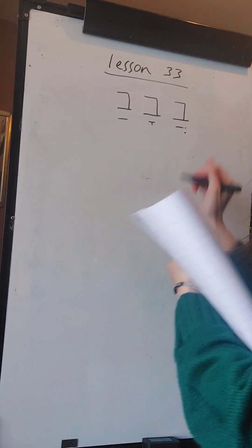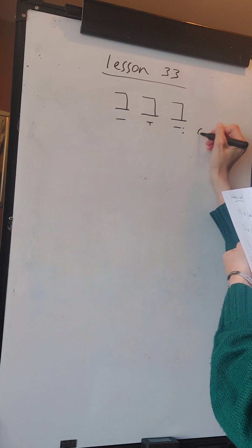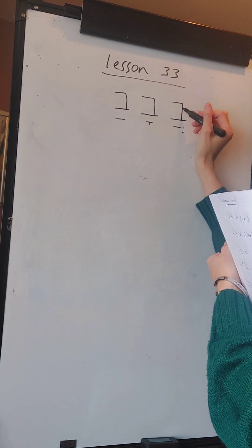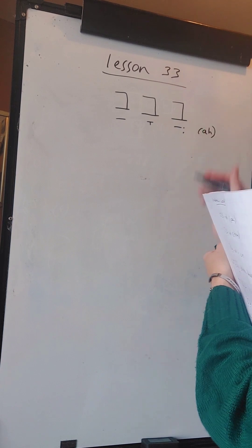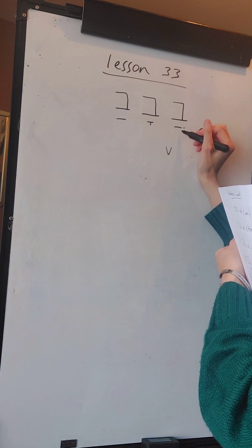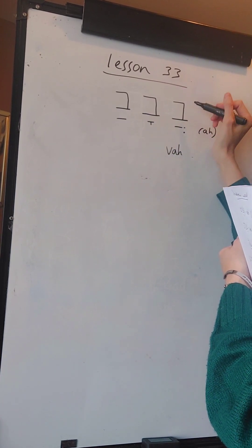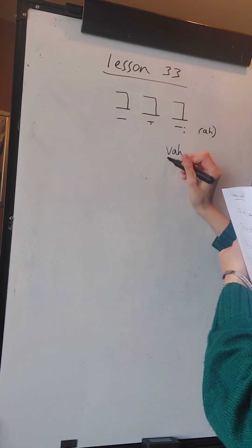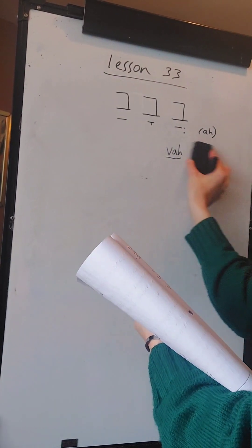We know from previous lessons that any of these three symbols underneath any Hebrew letter all sound as A. The rule in Hebrew is to read the consonant sound first - know the shape and know it's a Vet, know its sound which is V, and then you add the vowel sound A to the consonant sound. So it reads as VA. They would all read as VA.